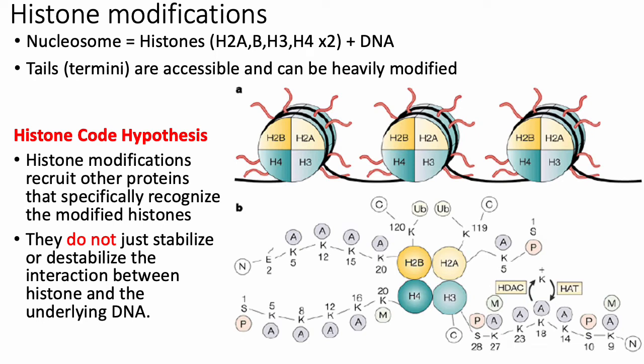A nucleosome consists of a complex of eight histone proteins with DNA wrapped around it. The important point is that the N and C terminals of those histone proteins are generally accessible and therefore can be heavily modified through post-translational modifications. Here in part A of the diagram, I'm showing you three different nucleosomes where the squiggly lines correspond to the N and C terminals coming out of those histone proteins.